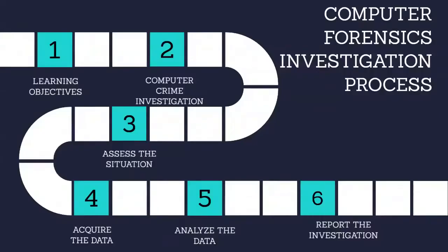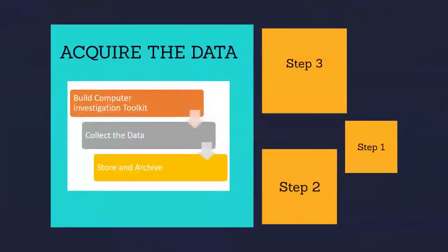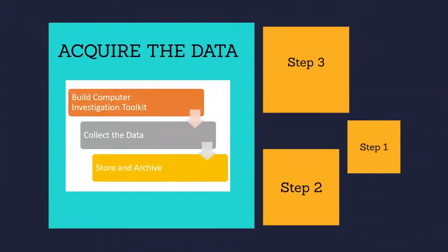The next phase of the computer investigation model is to acquire the data. This phase discusses how to acquire the data necessary for the investigation. Some computer investigation data is fragile, highly volatile, and can be easily modified or damaged. Therefore, you need to ensure that the data is collected and preserved correctly prior to analysis.